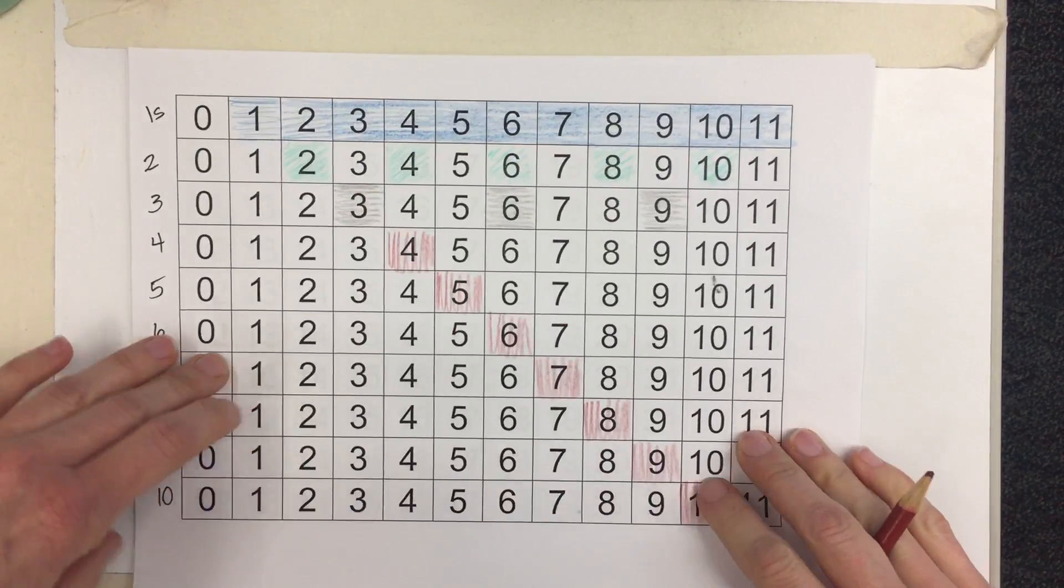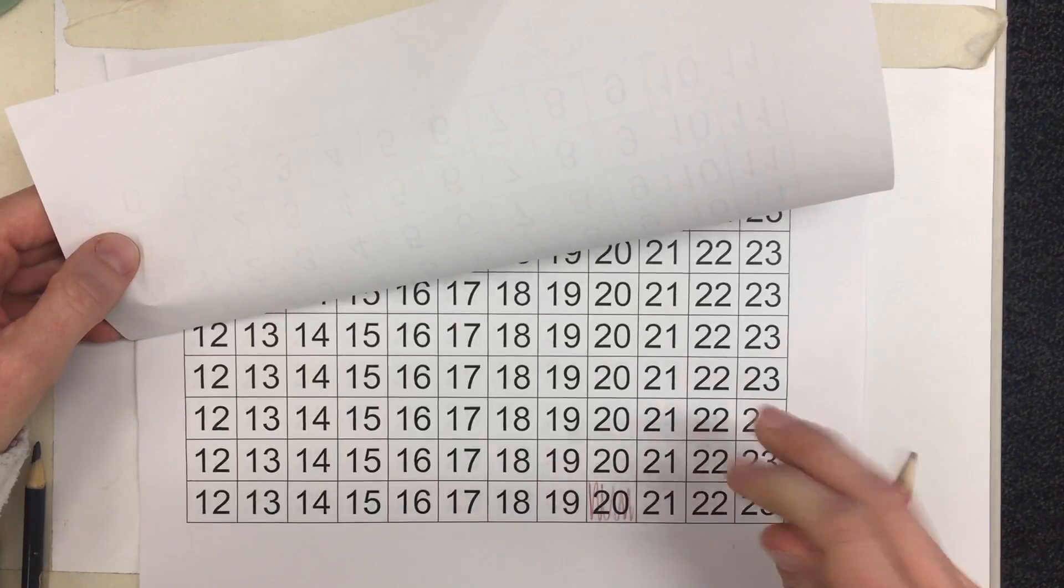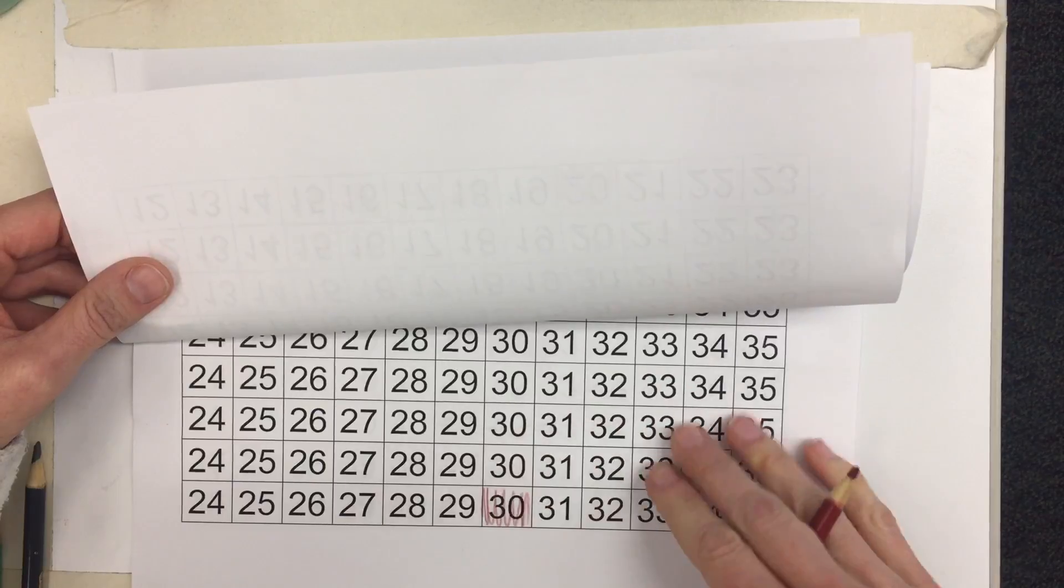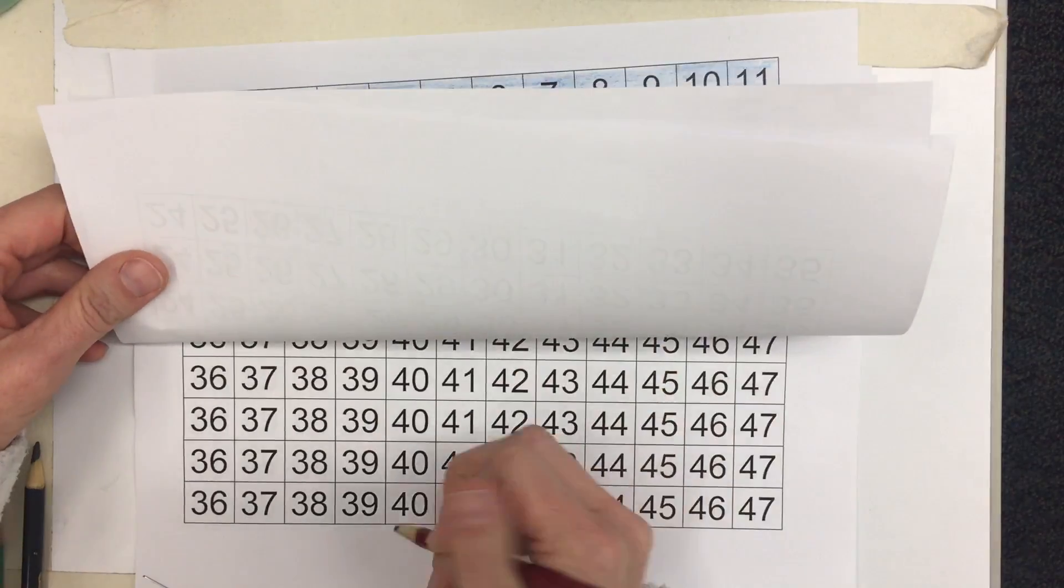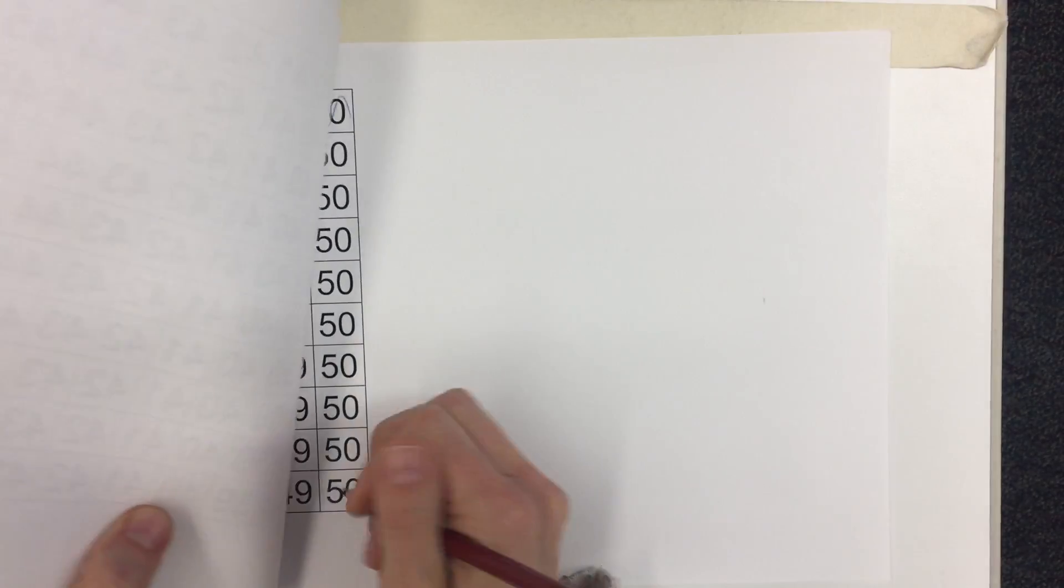So on this last row you're just counting by tens. So on the next page you're just going to color in 20 and 30, and there are 2 more: 40 and 50.